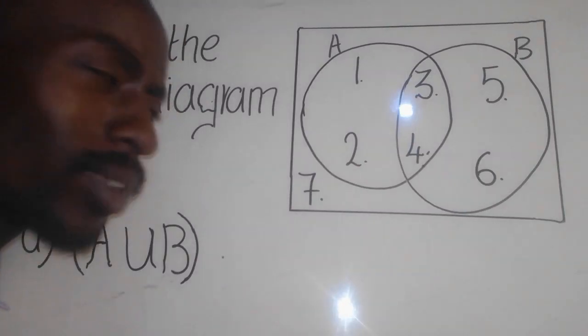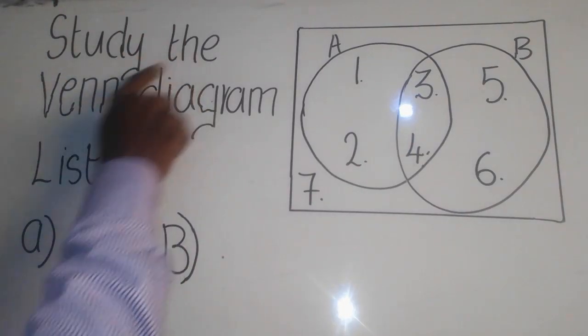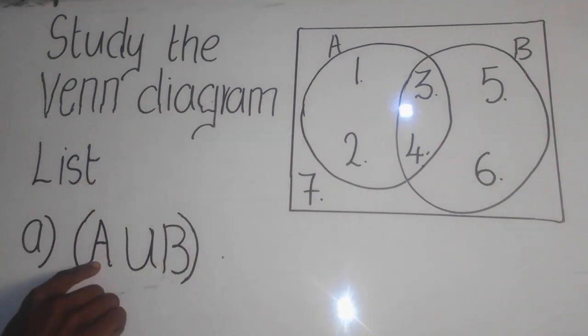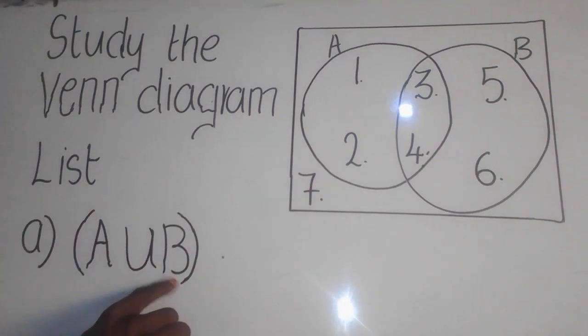We have a mathematics question that says study the Venn diagram. This Venn diagram here, list A union B, okay?